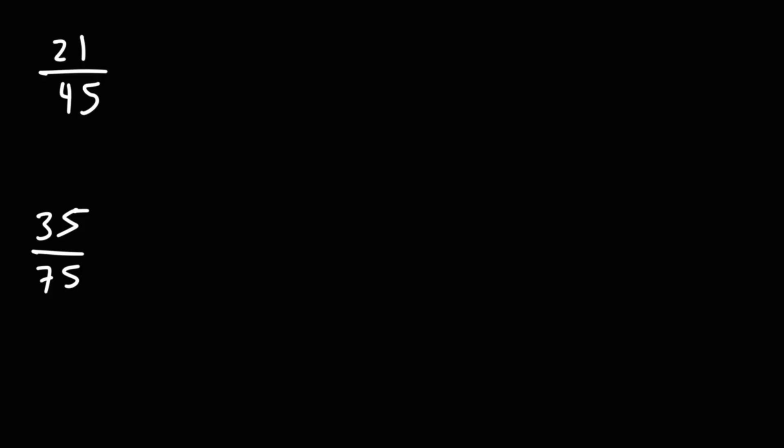Now 21 is divisible by 3, and 45 we could also divide that by 3. 21 divided by 3 is 7. 45 divided by 3 is 15. So this is the answer for the third example, 7 over 15.